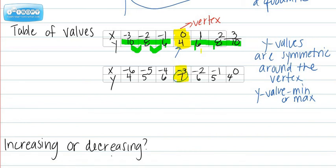Again, it's symmetric on either side, so I go down 6, 5, 4, 6, 5, 4. So this table would represent an absolute value function.